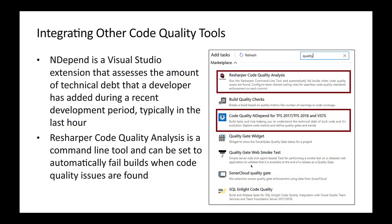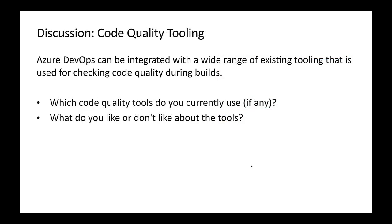There are multiple other code quality tools available: NDepend, ReSharper, WhiteSource Bolt, and many more in the market. Whichever is easiest or most compatible for your project, you can install from the marketplace. NDepend is a Visual Studio extension that tracks the amount of technical debt being accumulated. ReSharper is a command-line tool that can be configured to automatically fail builds if there are too many issues or problems with your technical debt.